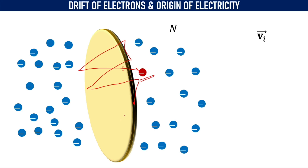after a certain time interval, the electron travels a certain distance, and distance traveled divided by time taken gives its speed. Since all the electrons are moving randomly, the number of free electrons crossing a given area in one direction will be equal to the number crossing the same area in the opposite direction. That's why the net current will be equal to zero.